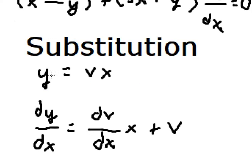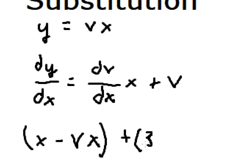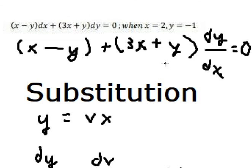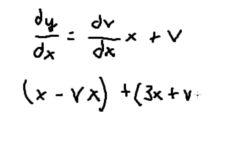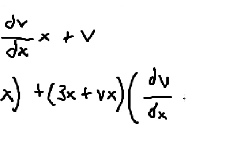Substituting in, we have x minus vx, and we have 3x plus vx, then multiplied by x times dv over dx plus v, equals zero.